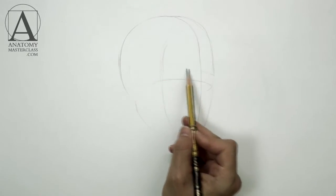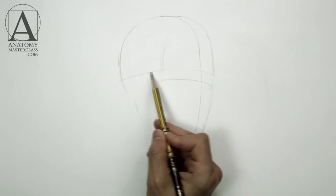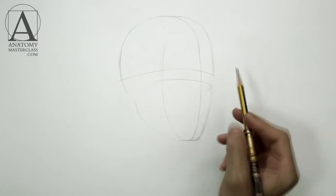As we see the model's head turned to the right and located above our eye level, the central line is curved to the right and the eye line is curved upward.